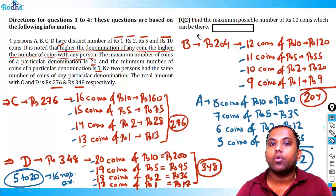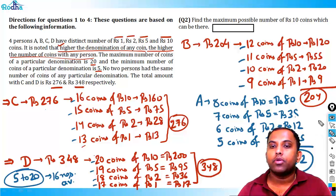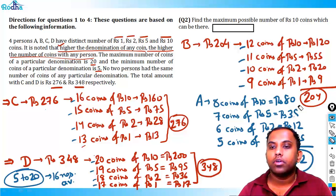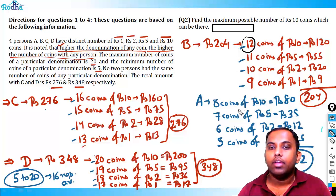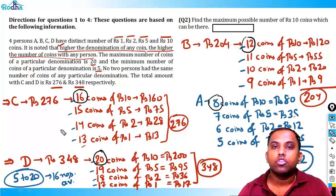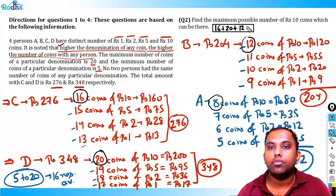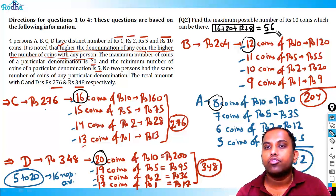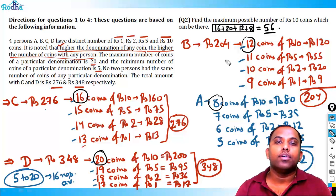Question 2: Find the maximum possible number of rupees 10 coins across all persons. D has 20 coins, C has 16 coins, B has 12 coins, and A has 8 coins of rupees 10. Total: 20 + 16 + 12 + 8 = 56. The answer is 56.